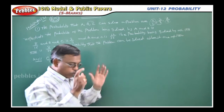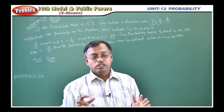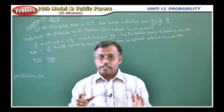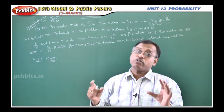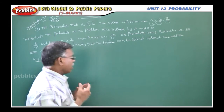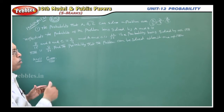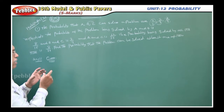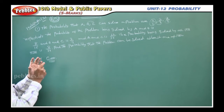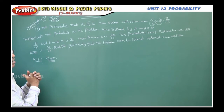At least one of them means — always remember — it is a union. Even in set language, at least one means A union B union C. To find P of A union B union C, one formula is there.